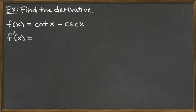The derivative f'(x) equals the derivative of cotangent of x, which is negative cosecant squared x.